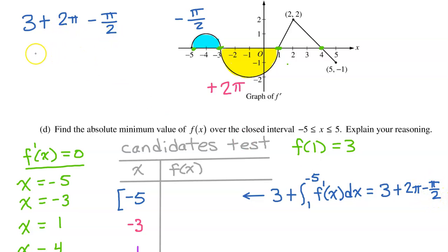So the value of f at negative 5 will be 3 plus 2 pi minus pi over 2. Let's simplify this down a little bit. 2 pi is the same thing as 4 pi over 2. 4 pi over 2 minus 1 pi over 2 is 3 pi over 2. So this is 3 plus 3 pi over 2. So that is f at negative 5.